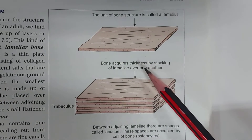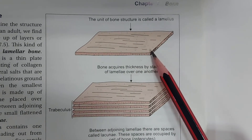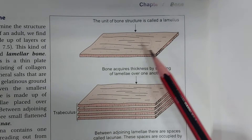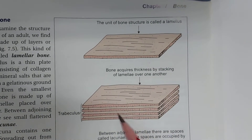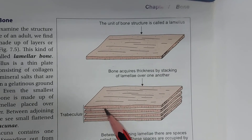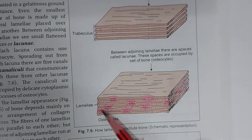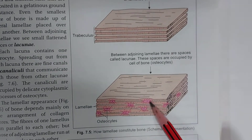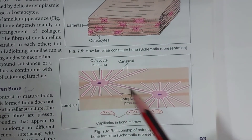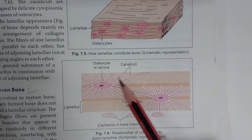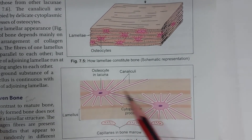Both types of bones are made up of bone tissue in layers called lamellae. The lamella is the basic unit of bone. Each lamella is a thin plate of bone made up of collagen fibers and minerals embedded in a gelatinous ground substance. The lamellae are arranged one upon another, and in between two sheets there is a gap called a lacuna. In the lacuna, osteocytes are present. Adjacent lacunae are interconnected by the cytoplasmic processes of the osteocytes.